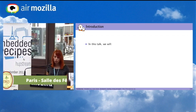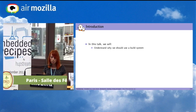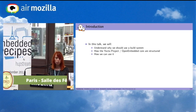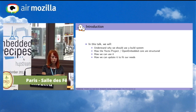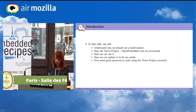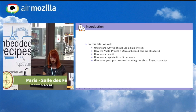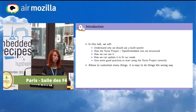In this talk, we will understand why we should use a build system, how the Yocto project and OpenEmbedded Core are structured, how we can use it, how we can update it to fit our needs — because you may have a custom application or custom board — and how we can integrate it in the Yocto project. I will also give you some good practices, because you can customize many things, so it's easy to do things the wrong way.